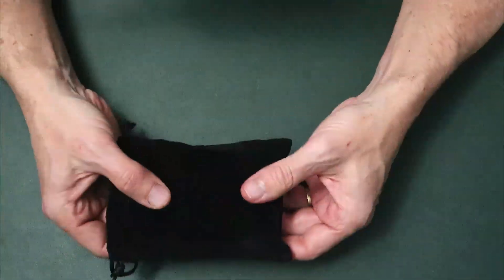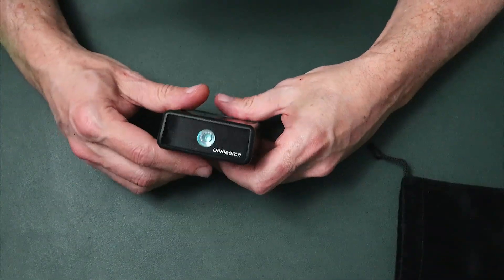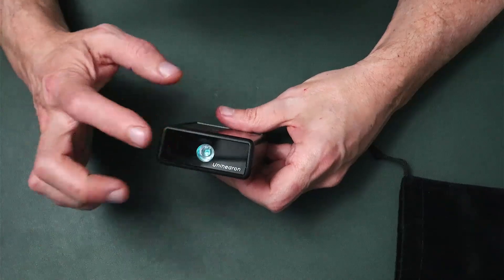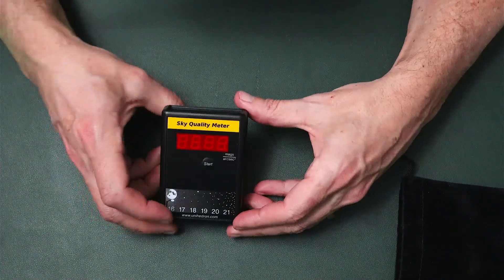Real quick, the unit itself comes in a nice velvet case to protect it, mainly to keep the sensor free from dirt, oil, scratches, what have you. Obviously it's important to keep that clean and free from scratches.